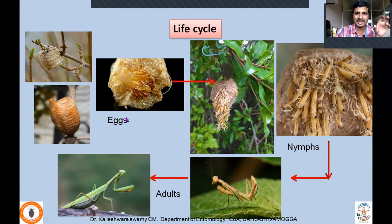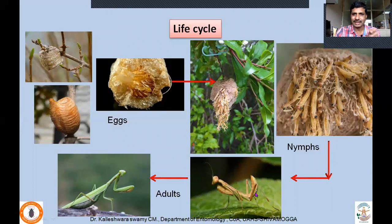Coming to the life cycle: the adult female deposits eggs. While depositing, it also releases frothy substances and attaches the egg mass or egg case to twigs, forming an ootheca (egg case) usually found attached to twigs. After some time, nymphs start emerging — they are hatching, coming out, and then start dispersing. They become solitary, moving out and looking for prey.